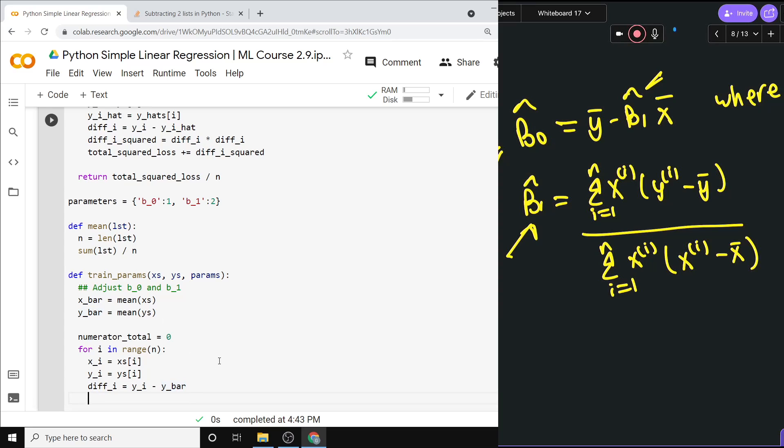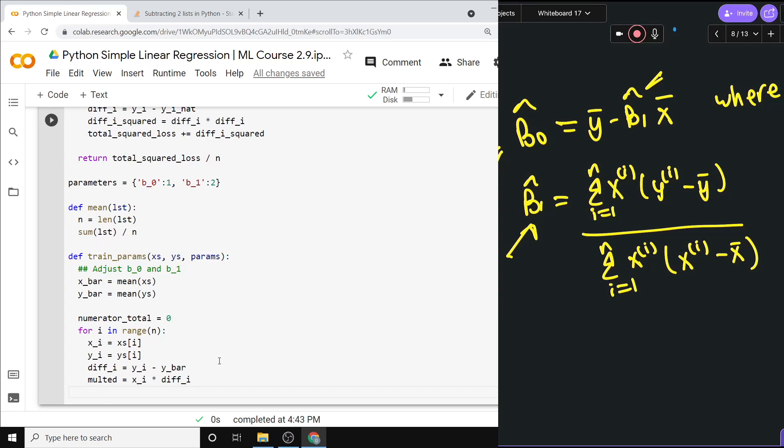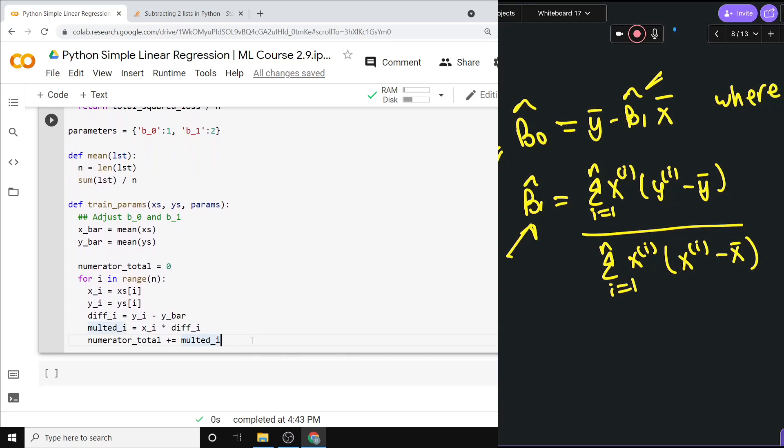And then we multiply that, so then we'll say mult_i equals xi times that thing, xi times diff_i. And that's what we need to sum up for the numerator, so I'll say numerator_total plus equals that mult_i thing. I should say mult_i just to be consistent with everything else. So that whole piece there, we sum over the pieces, so then we have the numerator_total.